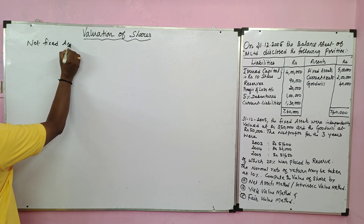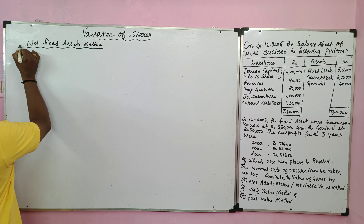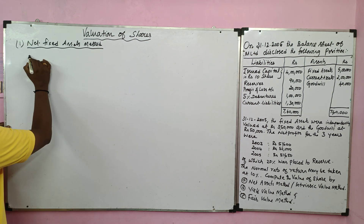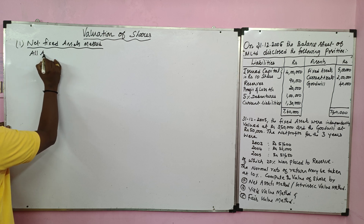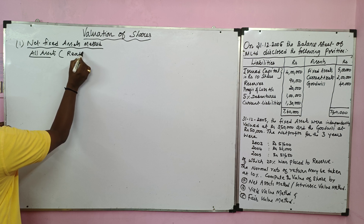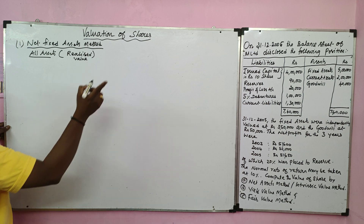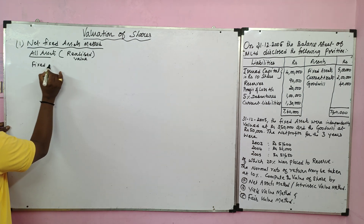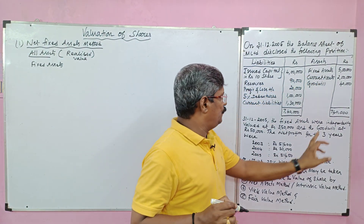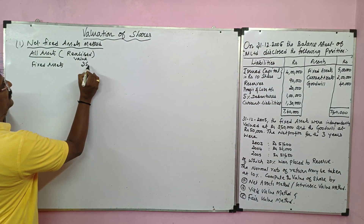Net assets method — first method. We are going to find share value by the net asset method. For that, we take all assets at their realized (new) values. First asset: fixed assets — old value 5 lakh, new value is 3 lakh 50 thousand. We take the realized value of rupees 3 lakh 50,000.